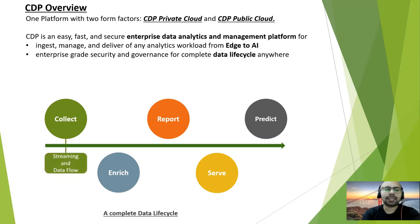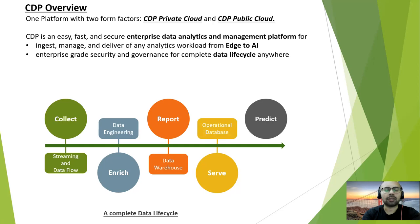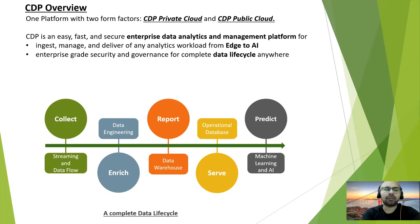What naming conventions or technologies does Cloudera use for all five stages of the data lifecycle? For collecting, they call it streaming and data flow, where they use NiFi and Kafka. For enriching or transforming, they call it data engineering, where they use Hive and Spark to transform the data and then store it in a data warehouse for reporting purposes. For serving, they use operational database, where HBase and Phoenix are used. And at the end, for prediction, they use machine learning and AI. These are the five related technologies for those five stages of the data lifecycle.